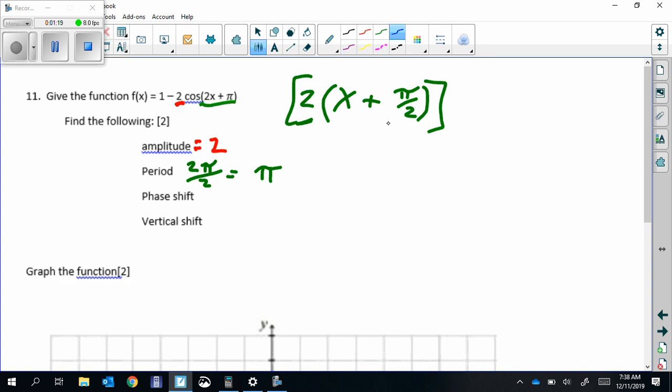The phase shift is the number in parentheses with the x. Plus pi over 2 means it's shifting to the left, pi over 2. The vertical shift is the constant that's by itself, the positive one, so that's shifting up one unit.